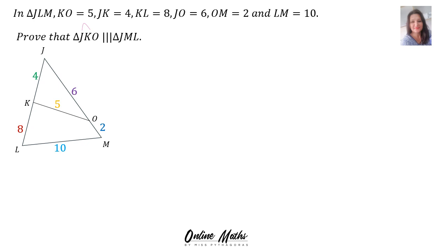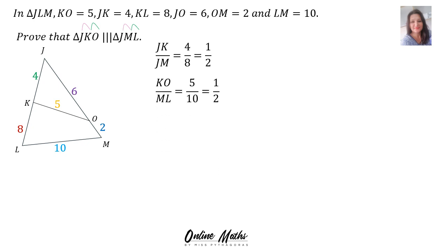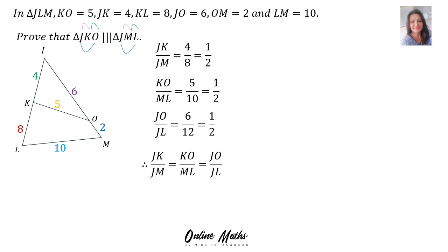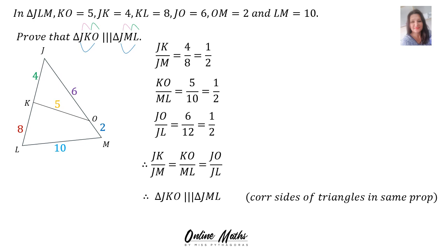Do you agree? JK over JM equals 4 over 8, which simplifies to one half. KO over ML equals 5 over 10, which simplifies to one half. JO over JL equals 6 over 12, and that's one half. Therefore, all three sides have a ratio equal to one half. Therefore, the two triangles are similar, and your reason is: corresponding sides of a triangle are in the same proportion.